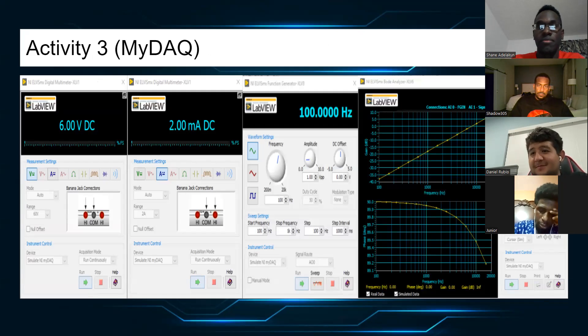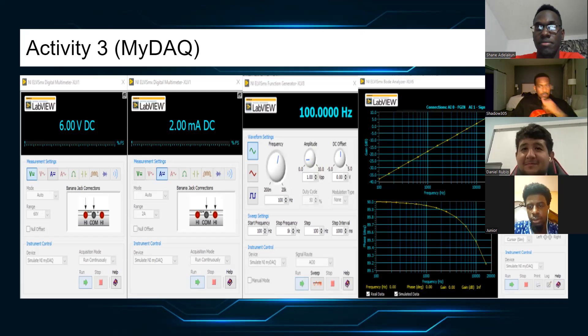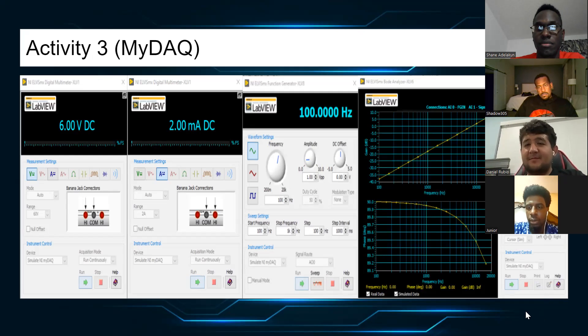For activity 3, it's similar to activity 1, the gain going up and then going down. You can see the trajectory and frequency.